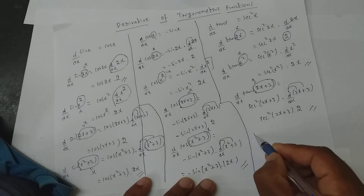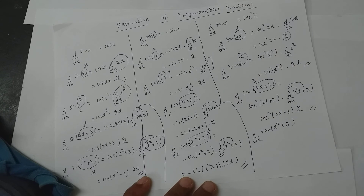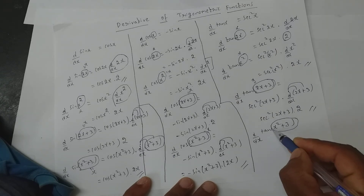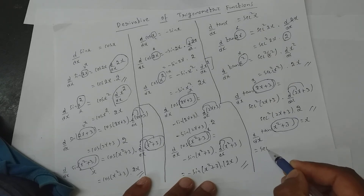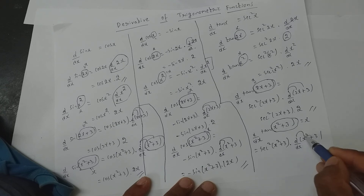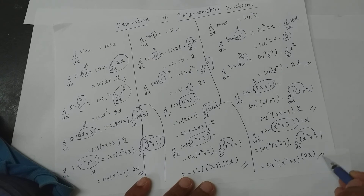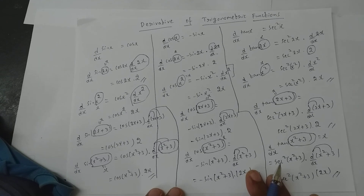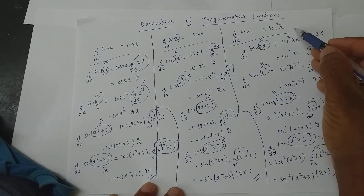Another example: d/dx of tan of x square plus 3. Again, assume this entire thing to be x. The derivative of tan x is secant square x, so it is secant square of x square plus 3, into d/dx of x square plus 3. This applies to each term, so on x square it is 2x and for 3 it is 0. So the answer is secant square of x square plus 3 into 2x.